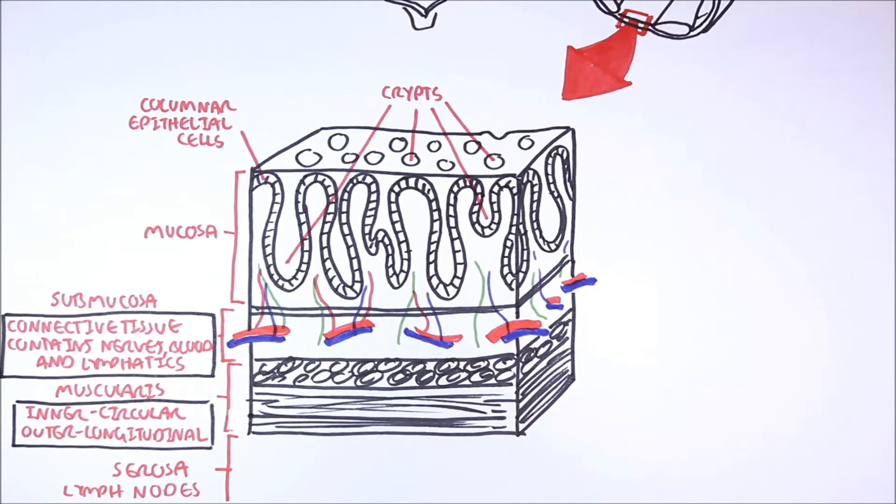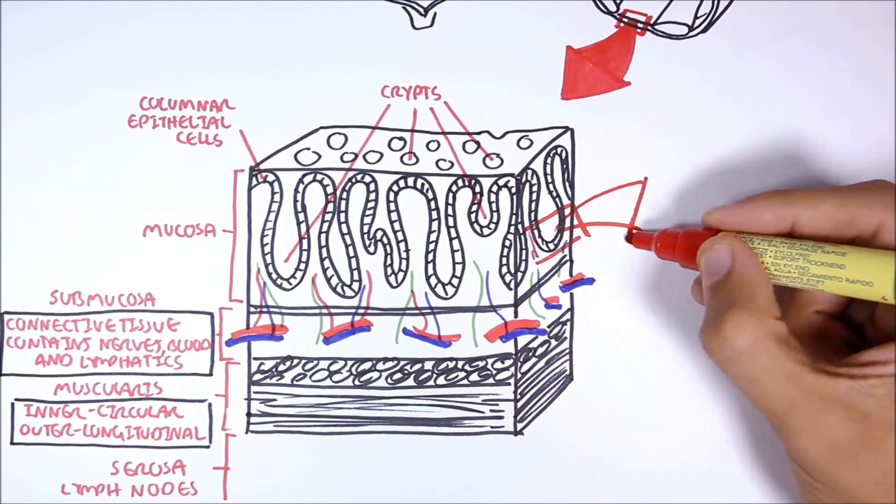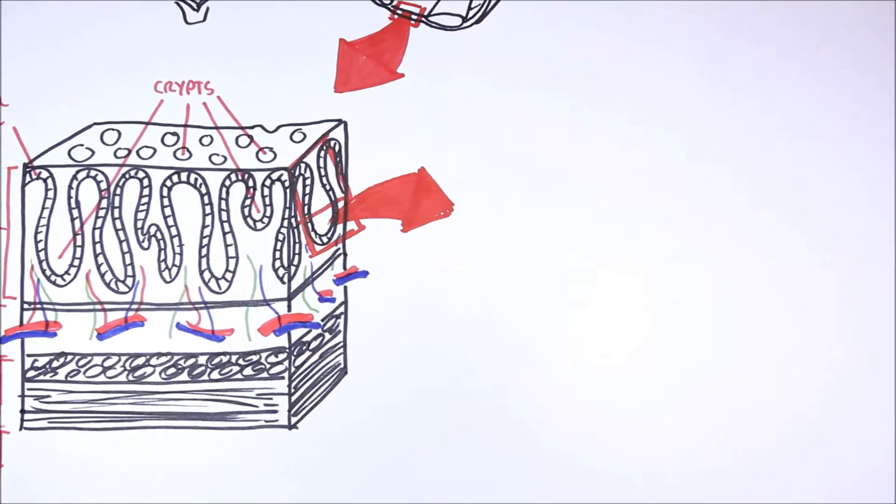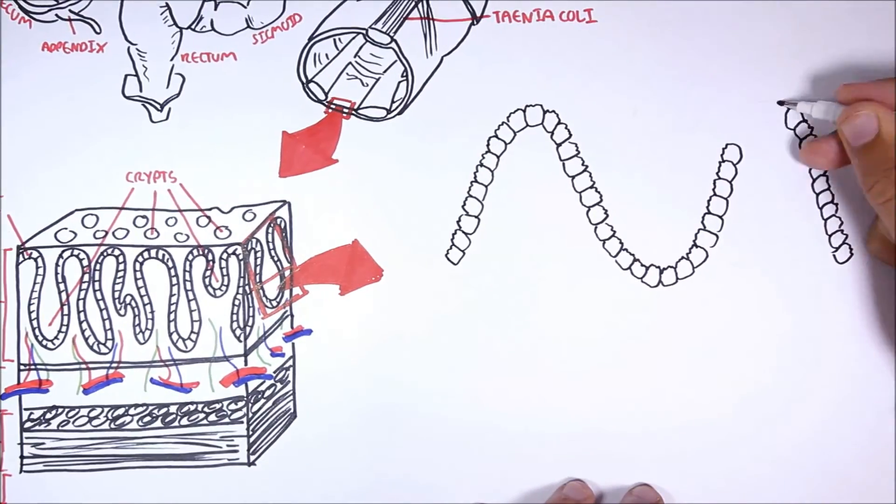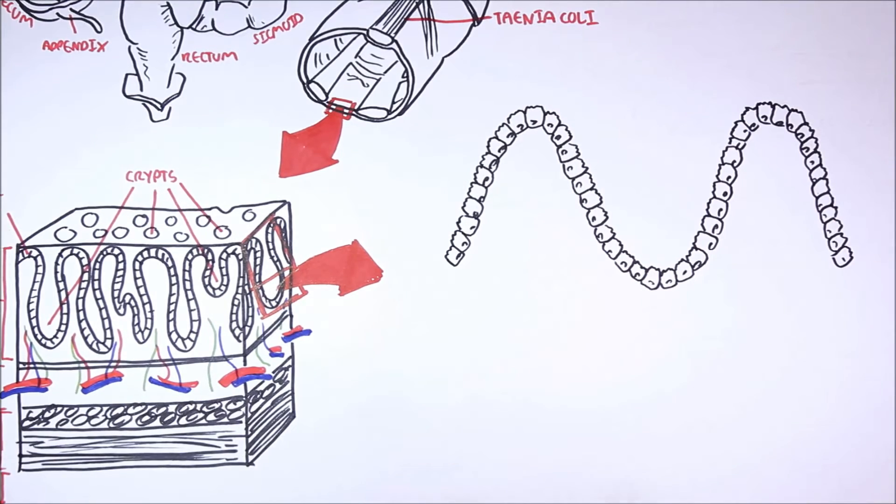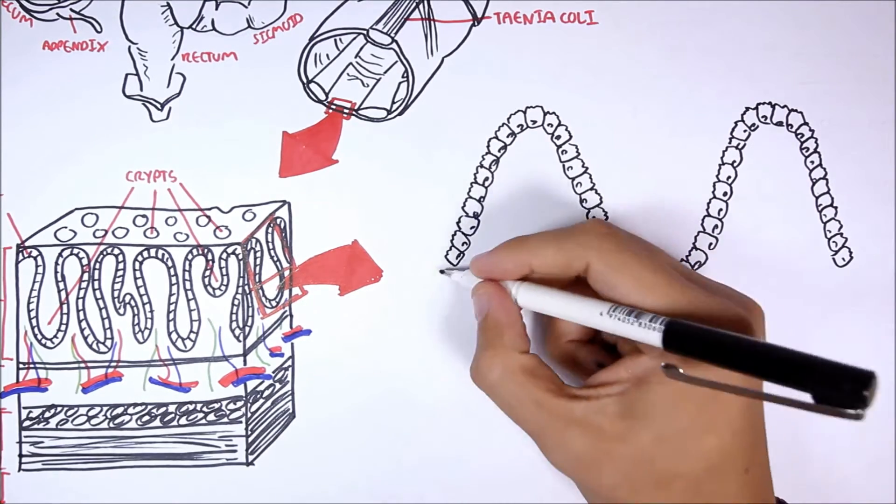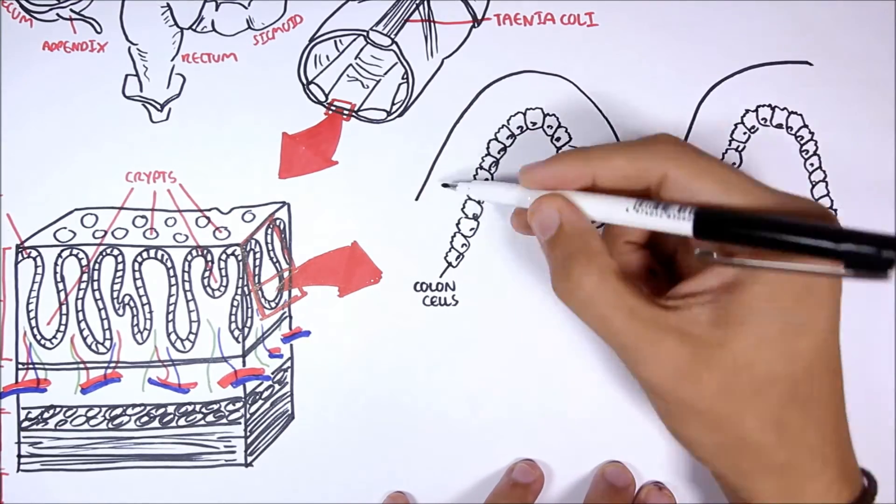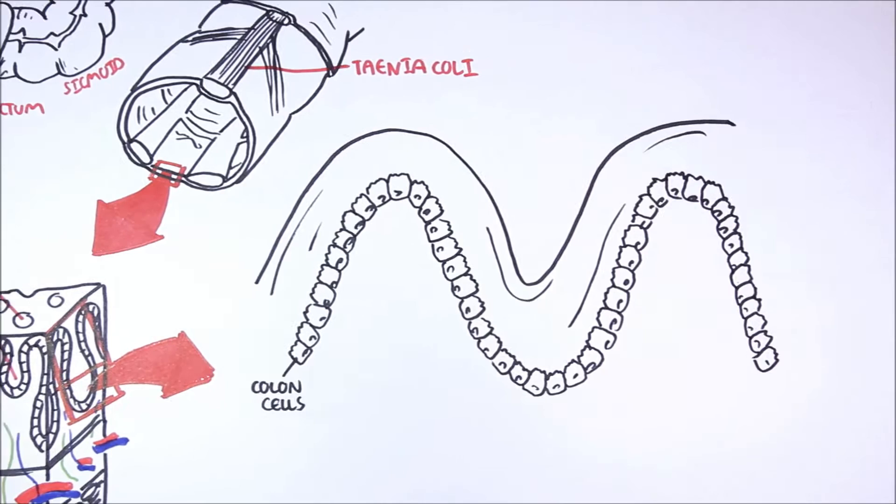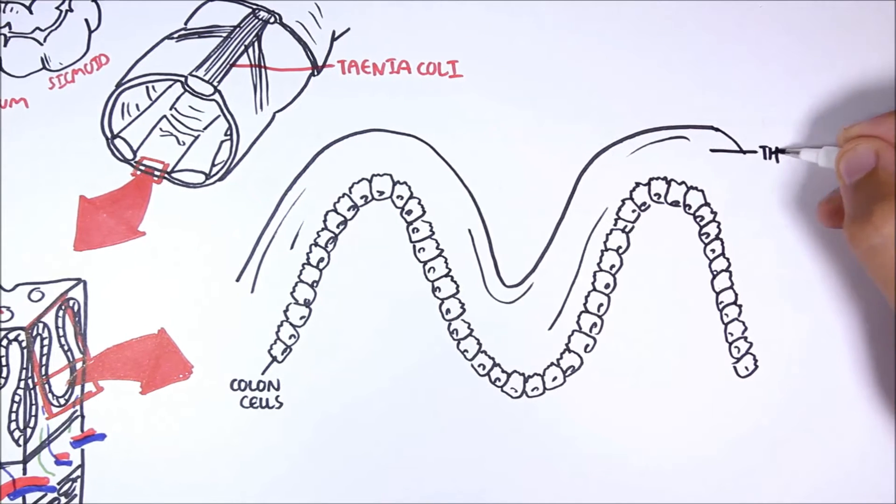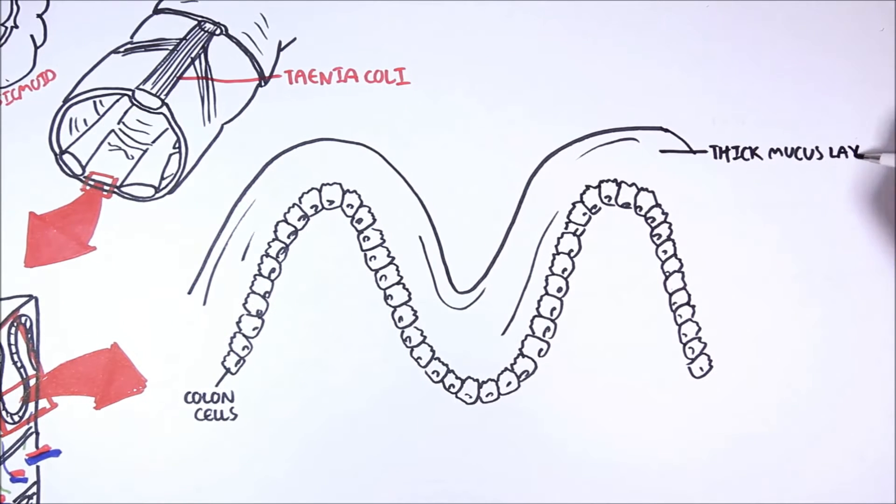Now, let's have a closer look at the mucosa layer and at these columnar epithelial cells here. Above the colon cells, we have mucus, which is a liquid-type substance that helps lubricate food, as well as protect the lining of the digestive tract from dangerous microbes and toxic substances.